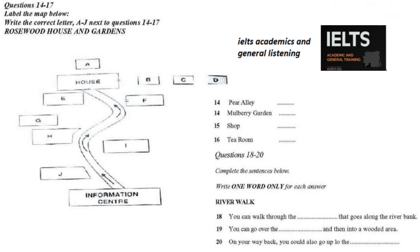Now please look at the map I've given you of the house and gardens. We're here at the information centre. Follow the path marked with the arrow and the first area you come to is the orchard on your left. As you go further down the path, there's the kitchen garden on the right. As you go around the first sharp corner you will find to your left an area where different types of pear tree have been planted as well as some lovely flowers — this is known as Pear Alley, designed by George himself.